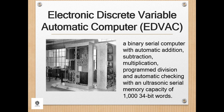The EDVAC, or Electronic Discrete Variable Automatic Computer, was one of the earliest electronic computers. Unlike its predecessor the ENIAC, it was binary rather than decimal and was designed to be a stored-program computer. ENIAC inventors John Mauchly and J. Presper Eckert proposed EDVAC's construction in August 1944. A contract to build the new computer was signed in April 1946 with an initial budget of $100,000. EDVAC was delivered to the Ballistic Research Laboratory in 1949, which became part of the U.S. Army Research Laboratory in 1952.